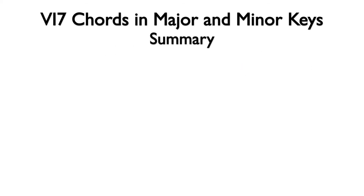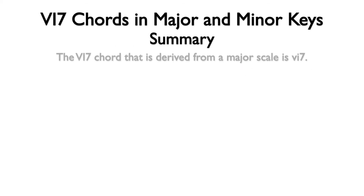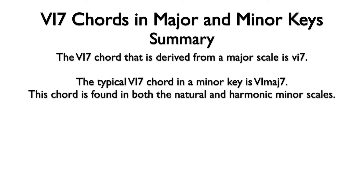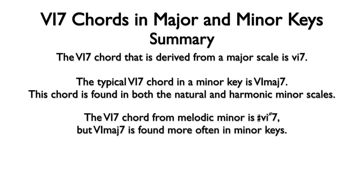Let's summarize. The sixth-seven chord derived from a major scale is sixth minor seven. The typical sixth-seven chord in a minor key is sixth major seven, and this chord is found in both the natural and harmonic minor scales. The sixth-seven chord from the melodic minor scale is sharp-six half diminished seven, but sixth major seven is found more often in minor keys.